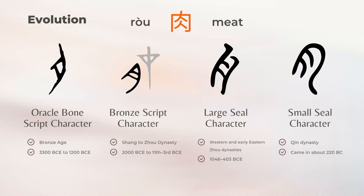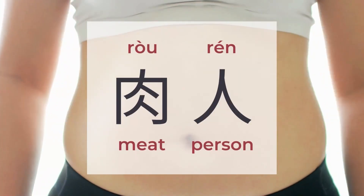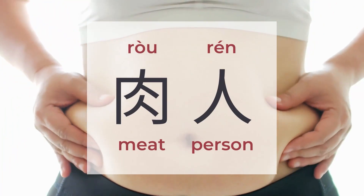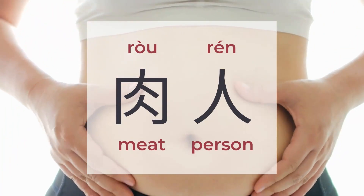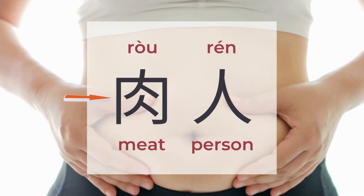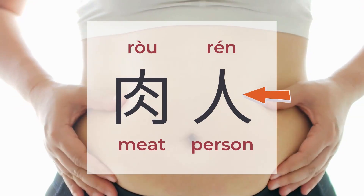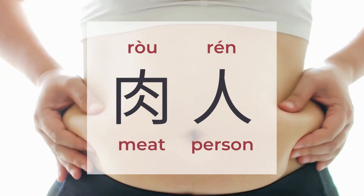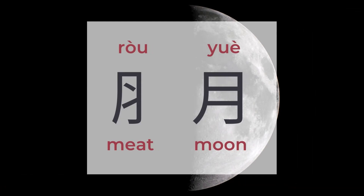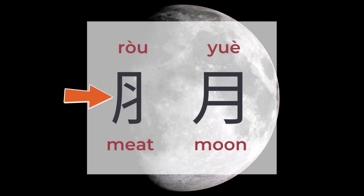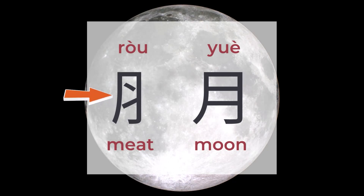肉 means meat. There are around 674 characters to be found under 肉. For the complete form 肉, there are two 人 (person) inside. For the left or bottom component, pay attention to the two strokes inside — they are slanted, not horizontal lines as in 月.